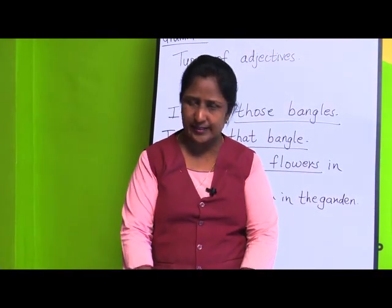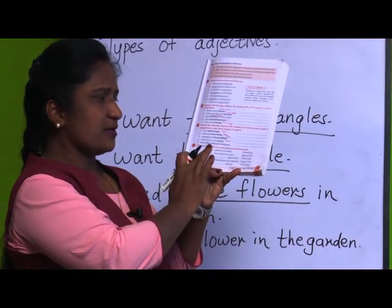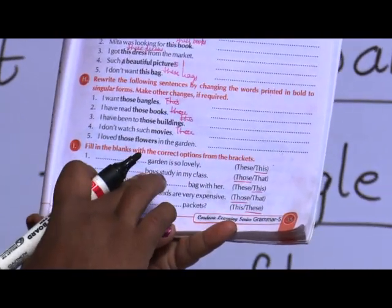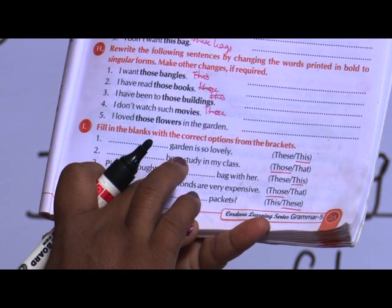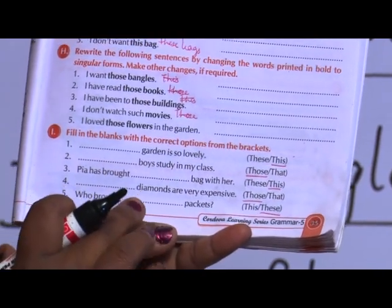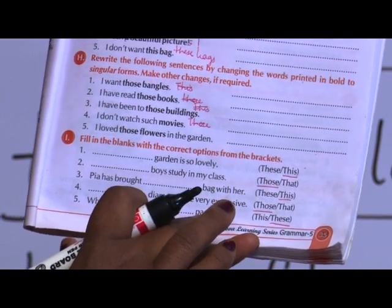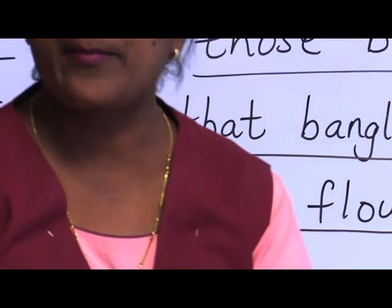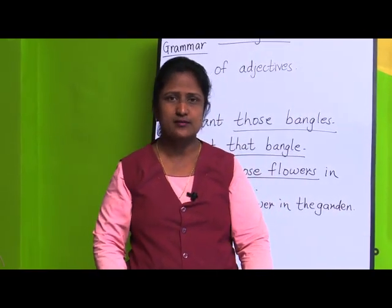Exercise I — fill in the blanks with this, that, these, or those. 'Dash garden is so lovely' — garden is singular, so 'this garden.' 'Dash boys study in my class' — boys are plural and far away, so 'those boys.' 'Pia has brought dash bag' — bag is singular, so 'this bag.' 'Dash diamonds are very expensive' — diamonds are plural, so 'those diamonds.' 'Who brought dash packets' — packets are plural, so 'these packets.' That completes demonstrative adjectives.